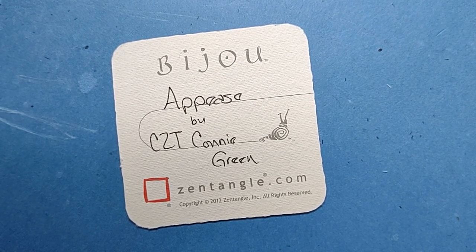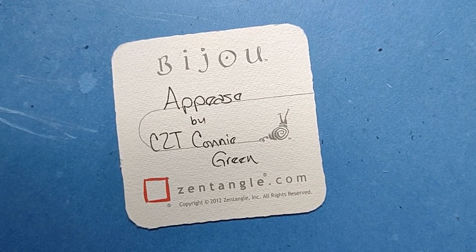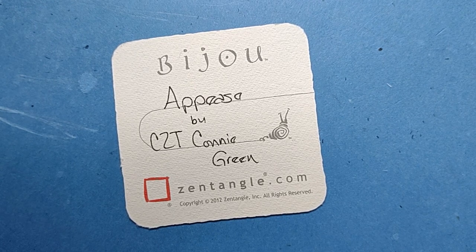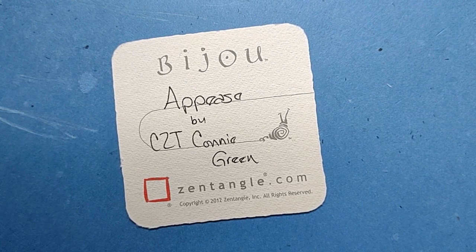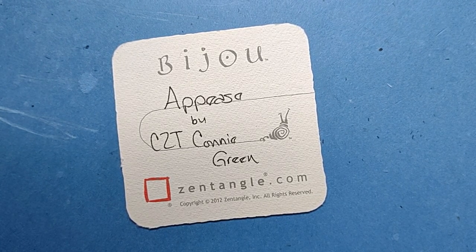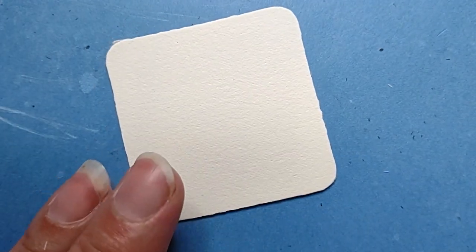Welcome to this Zentangle Quickie. My name is Heather Hartwick-Ladden, I'm a certified Zentangle teacher, and today we're going to take a look at the tangle Appease by CCT Connie Green. Now this is a neat tangle in that it has lots and lots of options for decorating. I call it a freeform tangle because you can kind of place it anywhere.